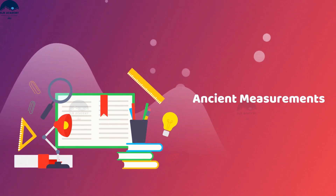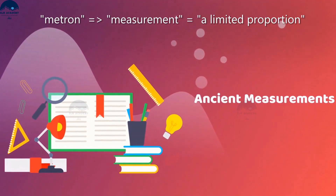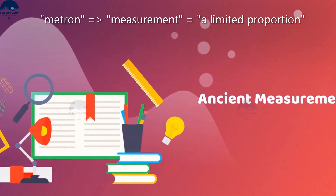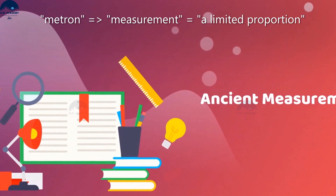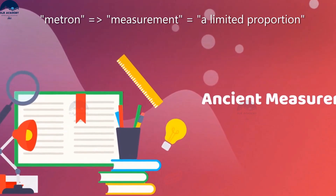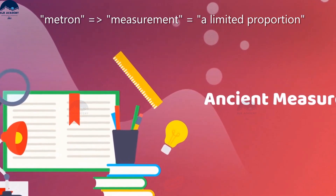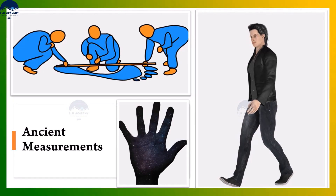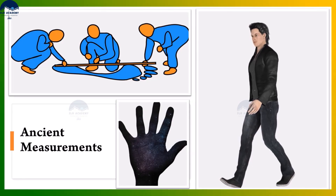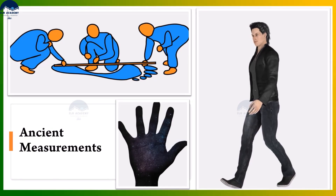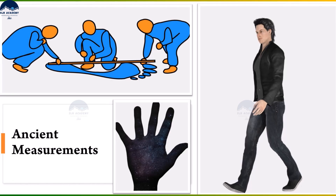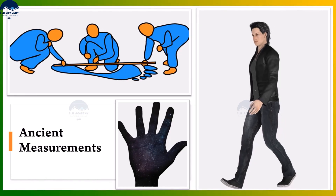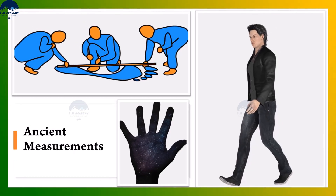Ancient measurements: the word measurement is derived from the Greek word 'metron', which means a limited proportion. In ancient times, the length of a foot, the width of a hand, and the distance of a step were commonly used as different units of measurements.